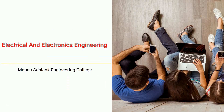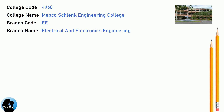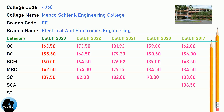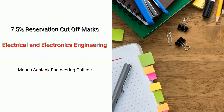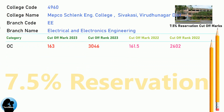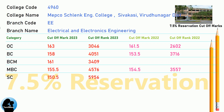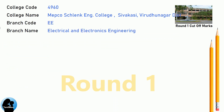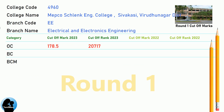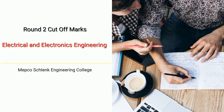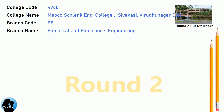Cut-off for Mepco Schlenk Engineering College in Electrical and Electronics Engineering. 7.5 Reservation Cut-off, Round 1 Cut-off, and Round 2 Cut-off for Mepco Schlenk Engineering College in Electrical and Electronics Engineering.